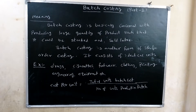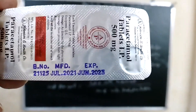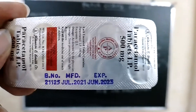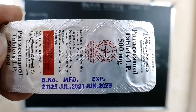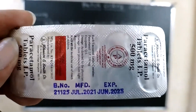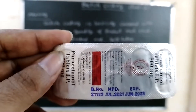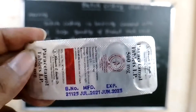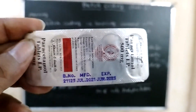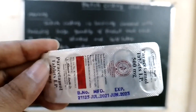Another example: batch number 2-2125, manufactured July 2021, expiry date June 2023. The batch number is given for a purpose — bulk goods are produced by companies, and if there is any problem, they find out in which batch and which month the product was manufactured. They then identify the workers responsible and take action.